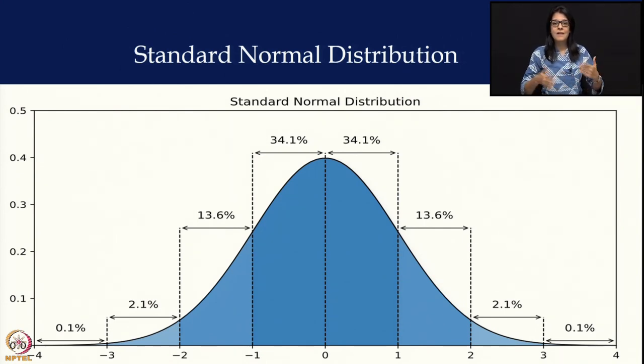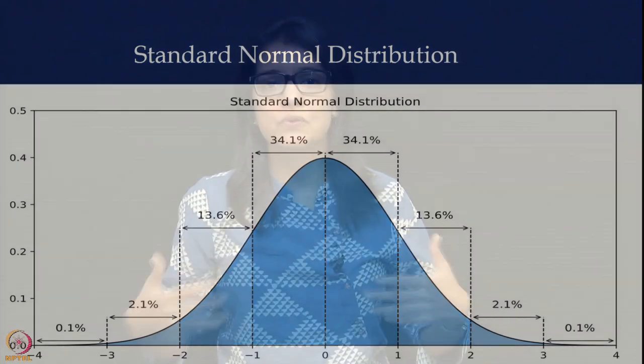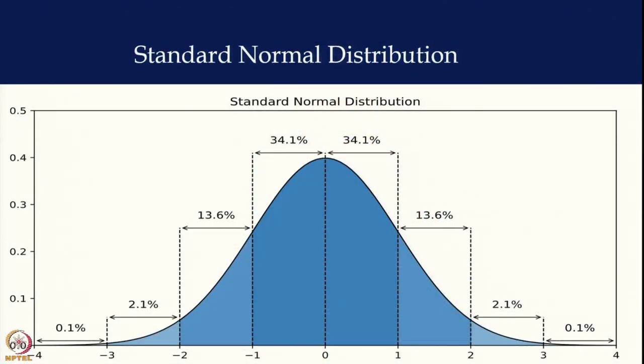We need to understand z-score growth charts because it is not taught as part of the curriculum in pediatrics. It is also important for healthcare workers because in programs they want to see how many children are undernourished — how many children are wasted and stunted. So let us discuss this chart.